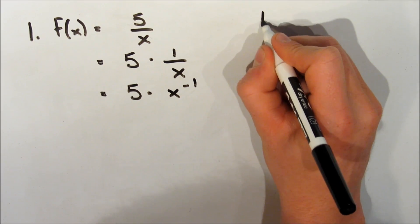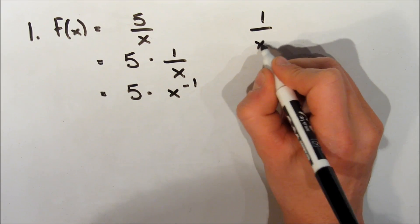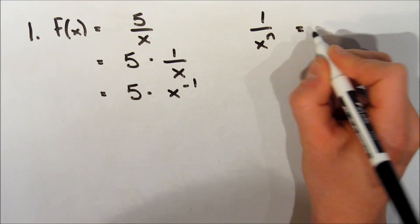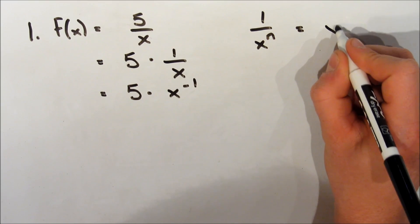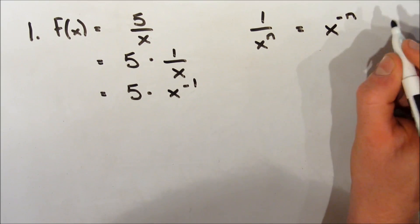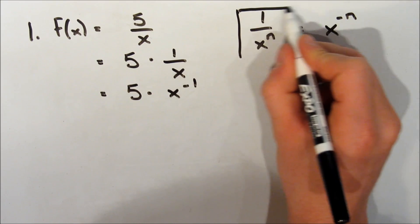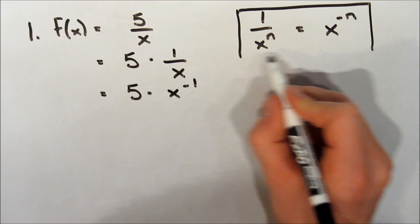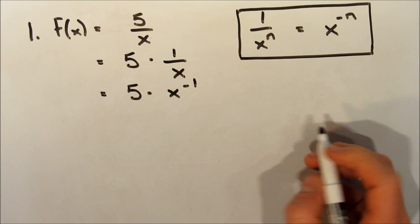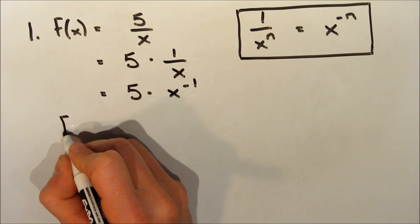There's actually a general rule for this: 1 over x to the exponent n is equal to x to the exponent negative n. So we could do this for 1 over x squared, 1 over x cubed — it doesn't matter, it all works the same way.